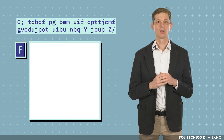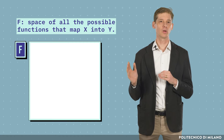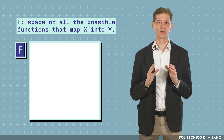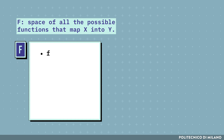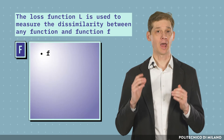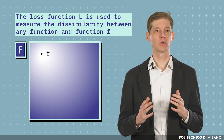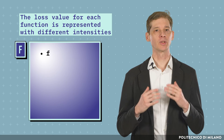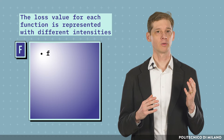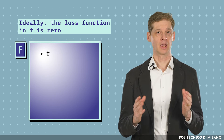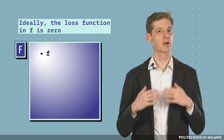In order to visualize these concepts, let's look at this graph. With capital F, we denote the space of all the possible functions that map x into y. In this space, the function we want to learn is represented by a point. Lowercase f is the unknown function that we want to approximate. The loss function L is used to measure the dissimilarity between any function and function f. The loss value for each function is represented with different intensities — the lighter the color, the lower the loss. Ideally, the loss function at f is zero, and its value increases as we consider functions that are very different from f.